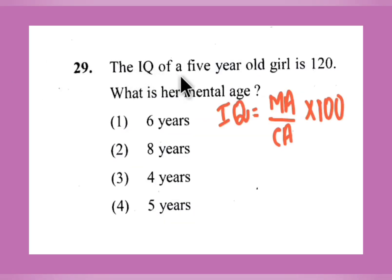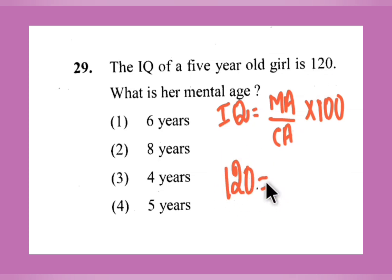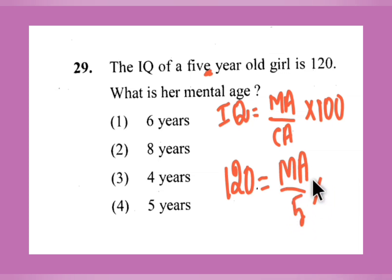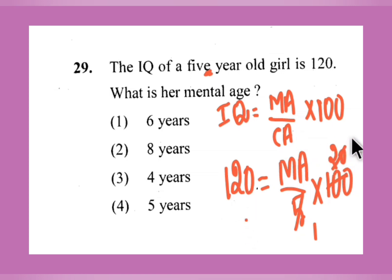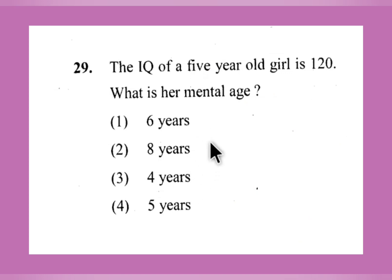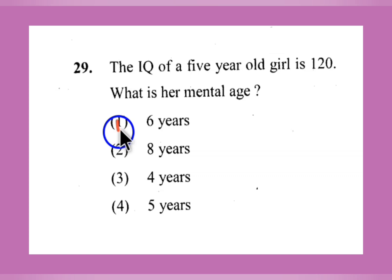Question number 29: The IQ of a 5-year-old girl is 120. What is her mental age? We know the formula: IQ = (Mental Age / Chronological Age) × 100. IQ is given as 120. Chronological age is 5 years. So 120 = (Mental Age / 5) × 100. On calculating, Mental Age = 6 years. Option number 1, 6 years, is the right answer.